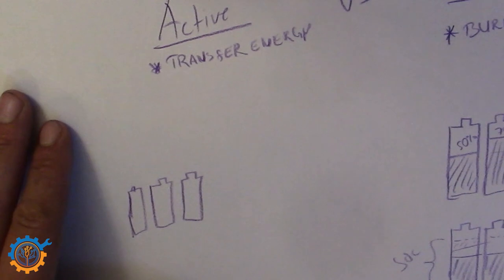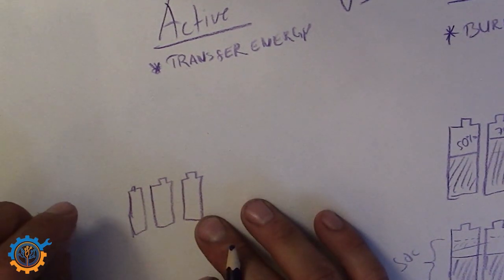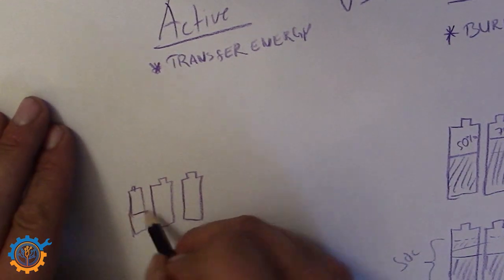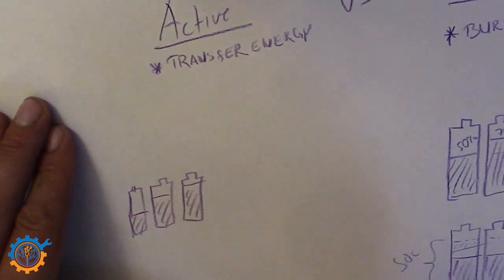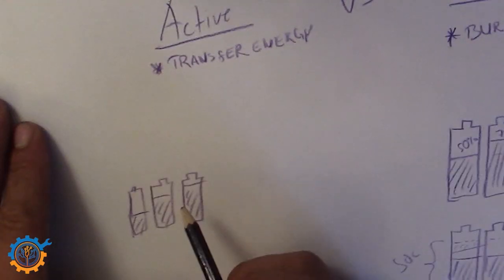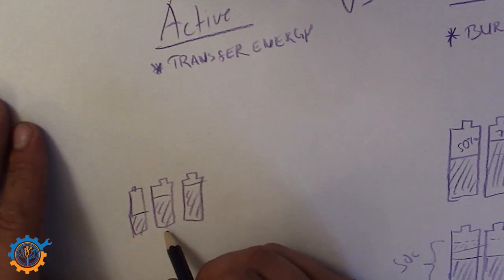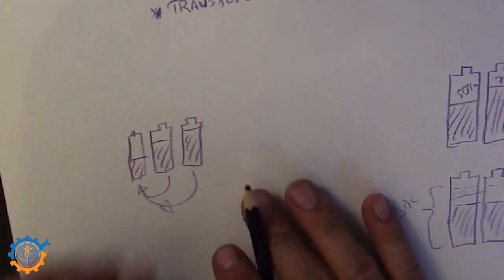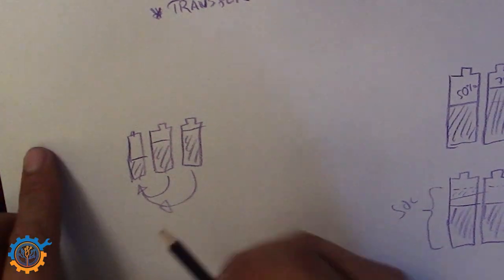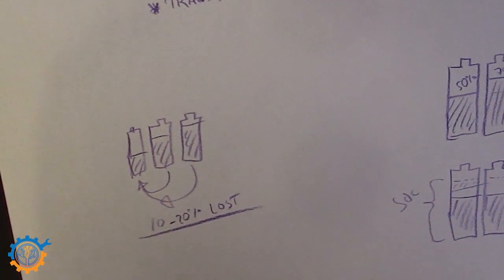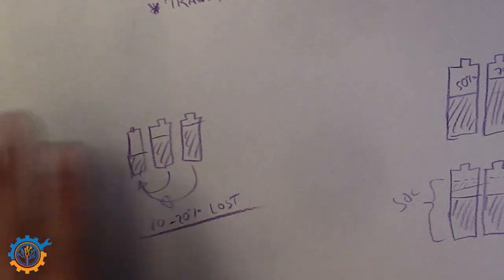Now let's get back to the active system. In an active system you have many advantages for batteries, but also many disadvantages. With packs at different states of charge, what active balancing does — regardless of the method — is transfer energy. It can take energy from one cell and transfer it to another cell. Note that every time you transfer energy, 10 to 20% is lost. I'm using a general number here — I know there are more efficient systems — but the cheaper active balancers are up in that range and they are producing heat.